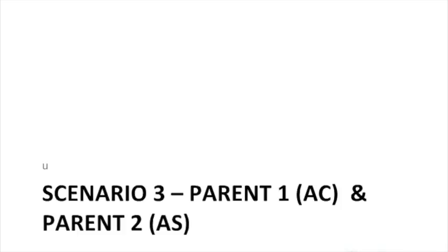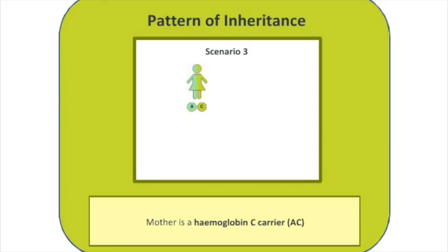In this final scenario we're going to consider something slightly different, where each parent has a different variant of the haemoglobin gene. Adult haemoglobin A is the most common adult form of the haemoglobin molecule. We've already discussed the S molecule — the sickle cell molecule — but there are many variants, and haemoglobin C is another illustrative example. In this scenario the mother has genotype AC and the father is a carrier of sickle cell so his genotype is AS.